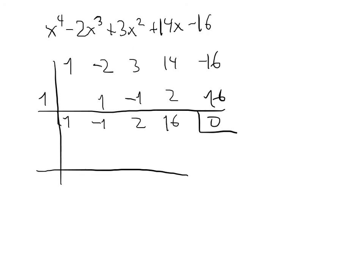Let's carry on. Let me now try with minus 2. 1 times minus 2 is minus 2. Plus 1 is minus 3. Minus 3 times minus 2 gives me plus 6. 6 plus 2 is 8. 8 times minus 2 is minus 16. And hence I get a 0. And of course now I have to solve the quadratic.